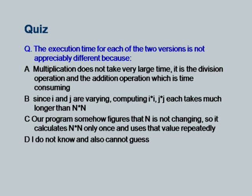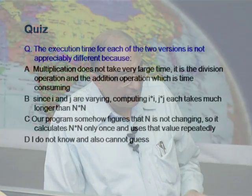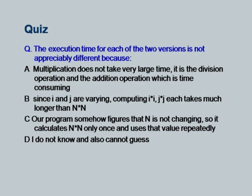Looking at answer D — 'I do not know and cannot guess' — as a novice, first-year students often give this answer. The correct answer is however C: our program somehow figures that N is not changing, so it calculates N squared only once and uses that value repeatedly.